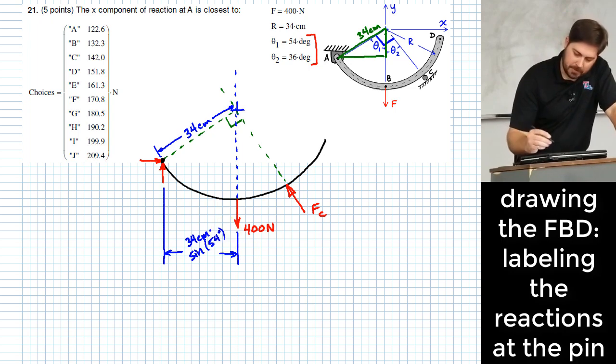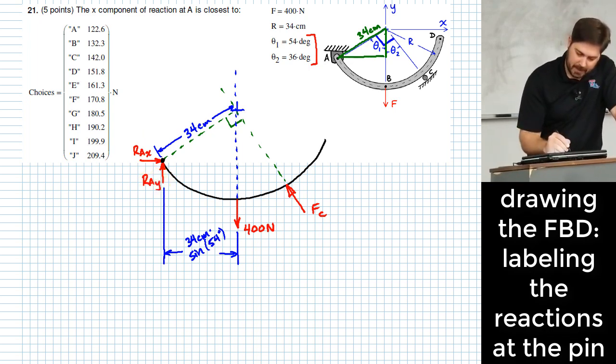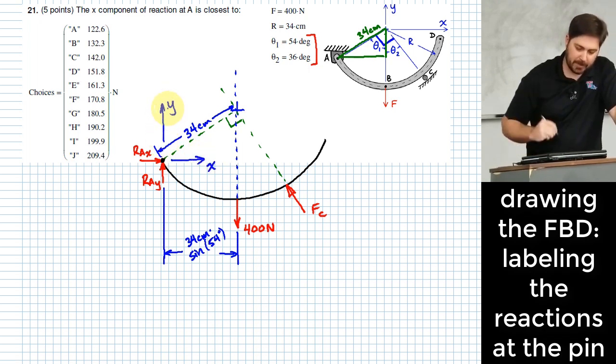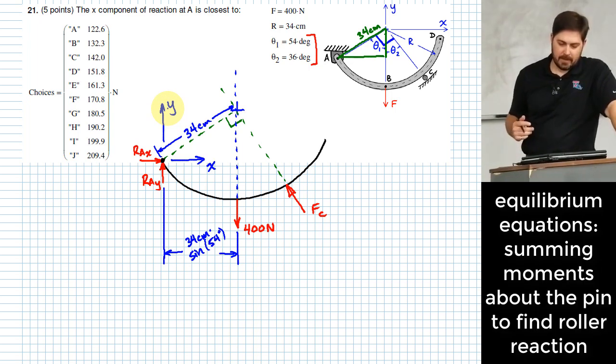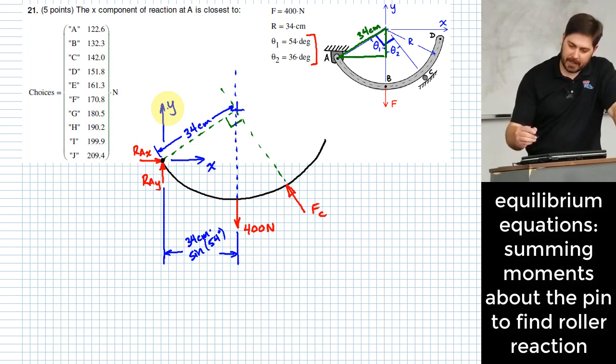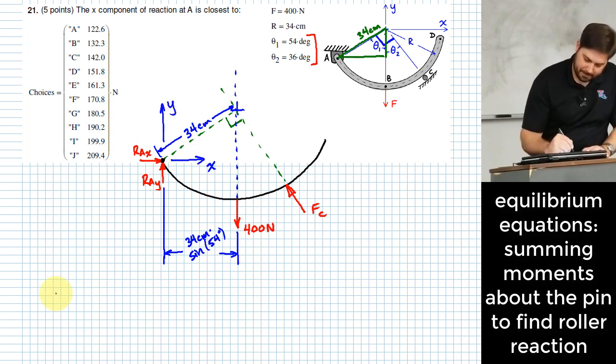Okay. I should probably label my reactions at A. I have R a X and R a Y. Kind of embedded in that is this presumption that I'm going to use X and Y coordinate system like this. So I'll put that on there here. And I'm in good shape with this little free body diagram to do a sum of moments around A.